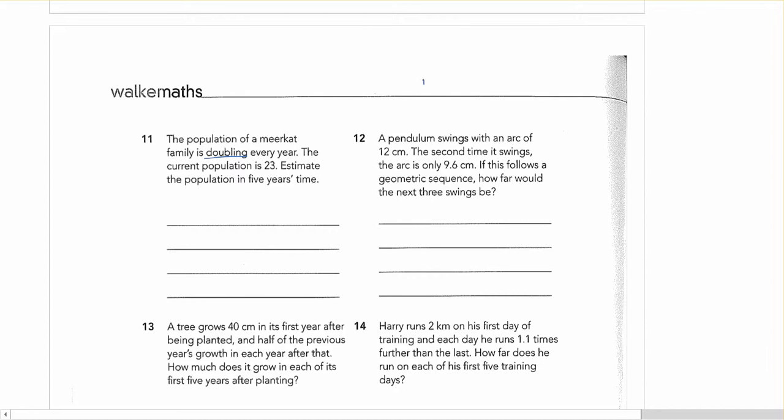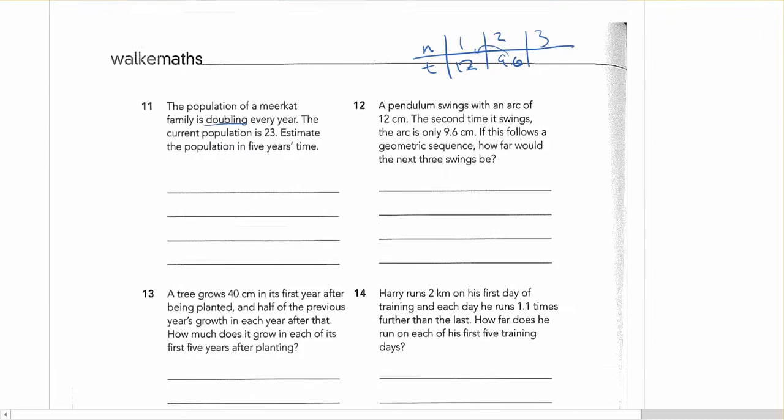Here you might have to write out the first few terms in the sequence. So the first time it swings is 12. The second time it swings is 9.6. And then we can find r again by doing the second term on top of the first term. You'll be able to find your r.